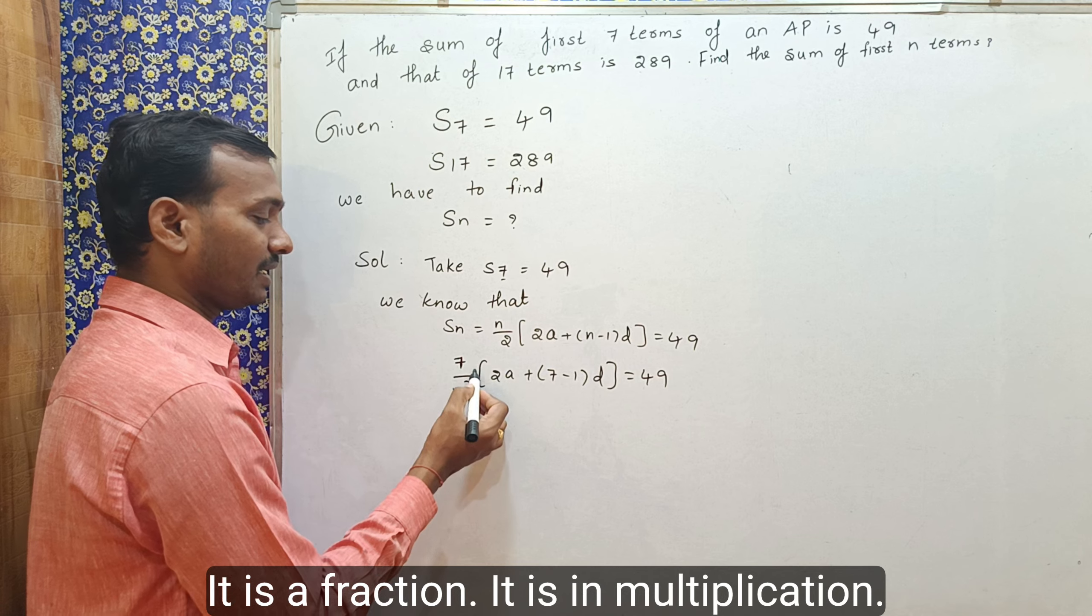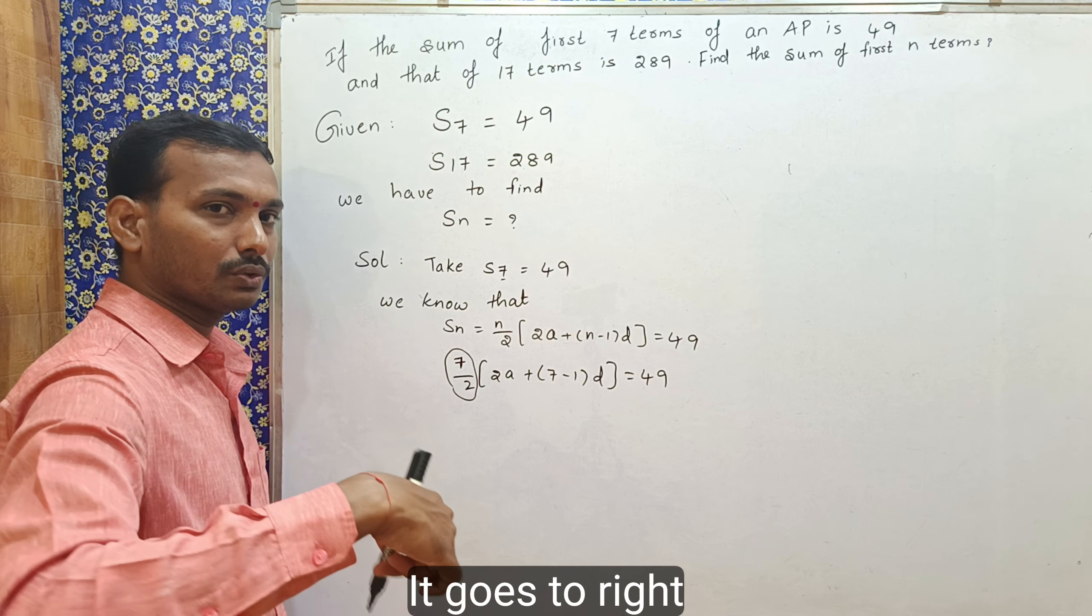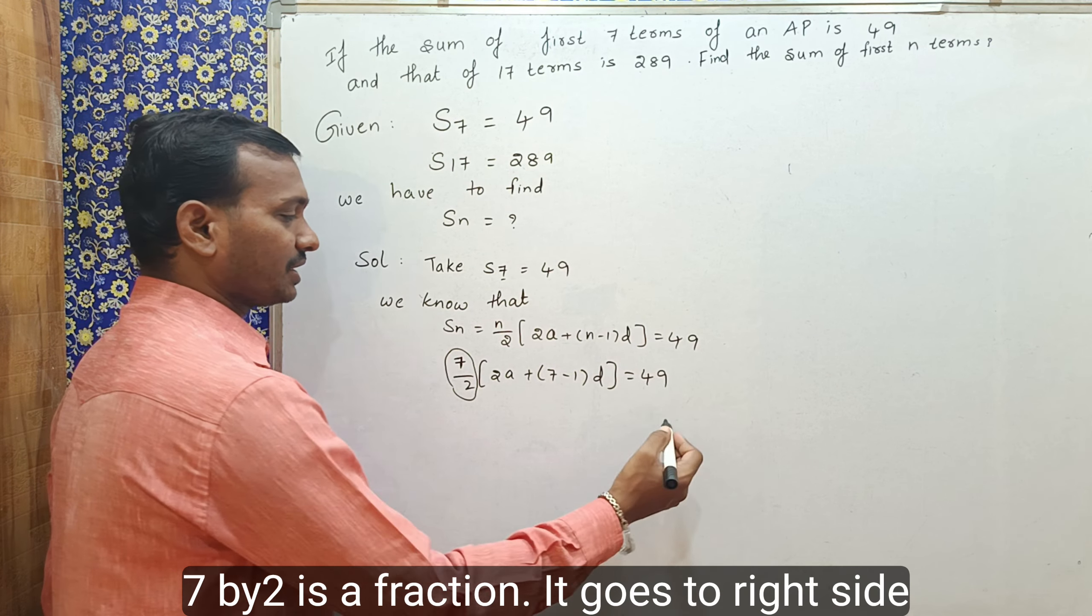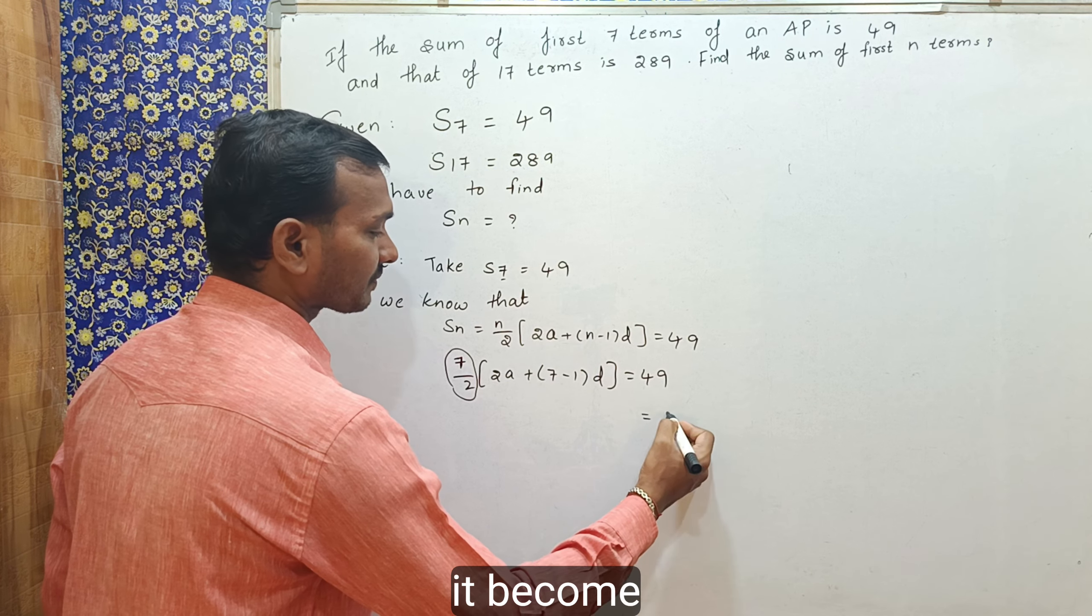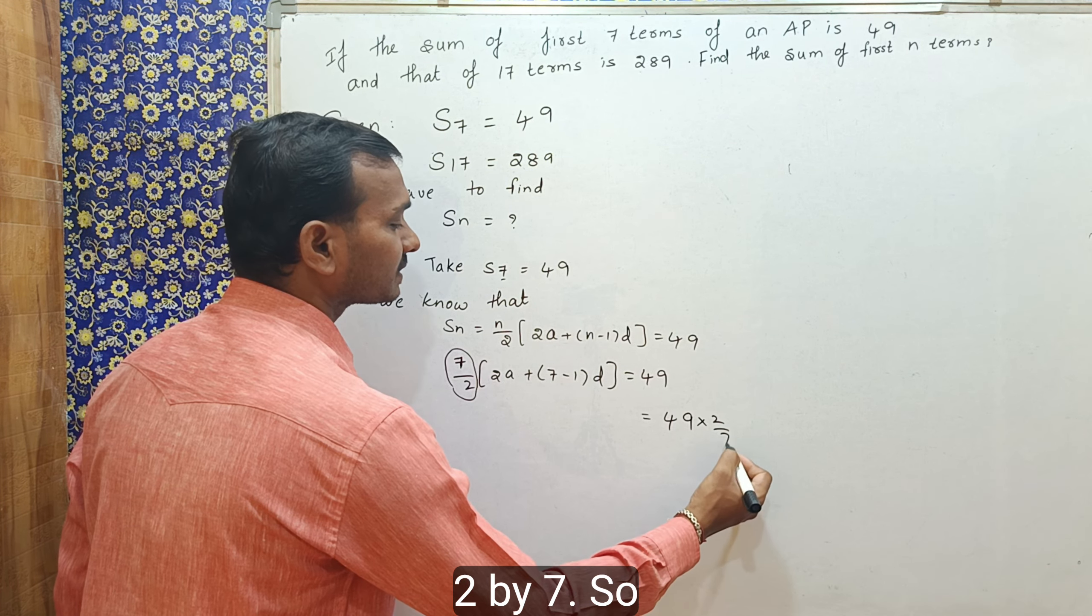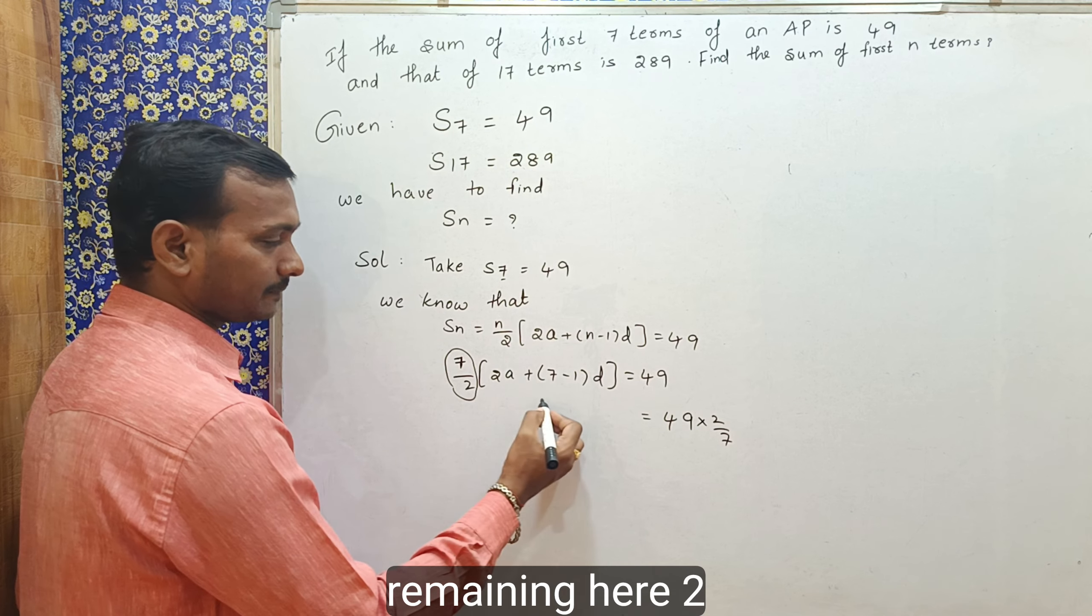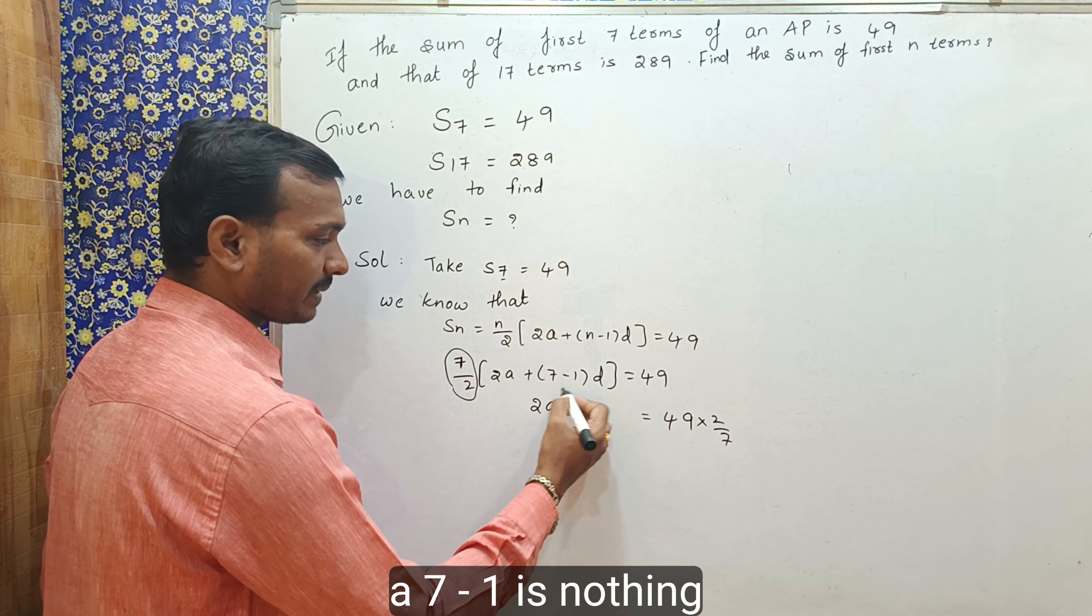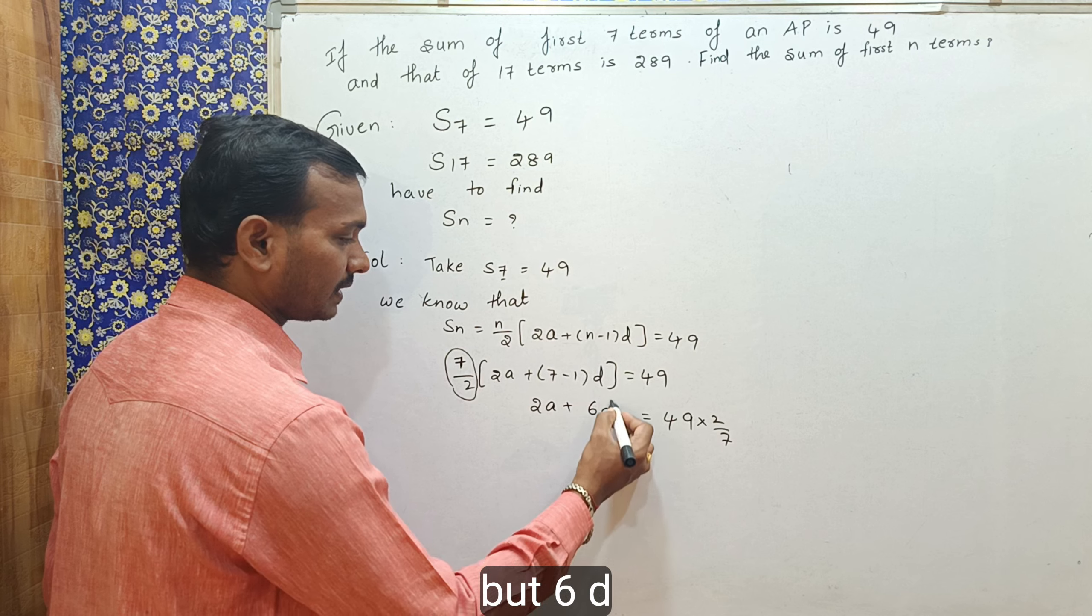It is a fraction in multiplication. It goes to right side. 7 by 2 is a fraction, it goes to right side. It becomes 49 into 2 by 7. So, remaining here, 2a, 7 minus 1 is nothing but 6d.